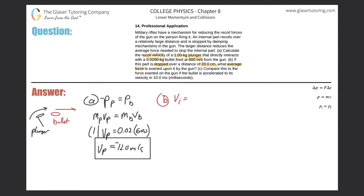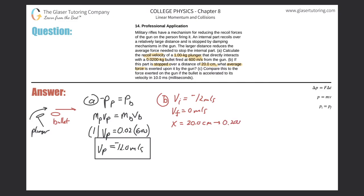The initial velocity of the plunger is negative 12 meters per second and the final velocity is zero — it was stopped. The stopping distance is 20.0 centimeters, which we convert to 0.20 meters. The displacement should also be negative since the plunger is moving to the left. We're looking for time — I need it to calculate the average force using the impulse-momentum formula.